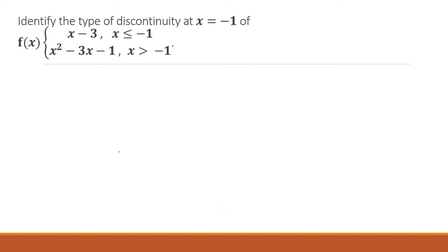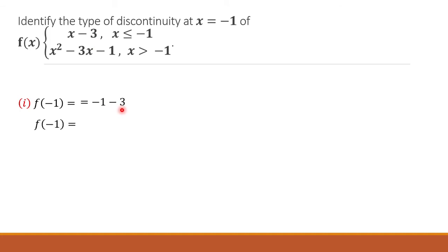For another example, let us identify the type of discontinuity at x equals negative 1 for this piecewise function. Solving for f of negative 1, we use the first piece, which is x minus 3. By direct substitution, we have negative 1 minus 3, which equals negative 4.